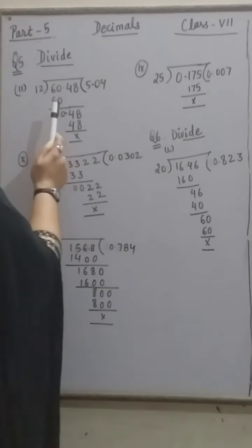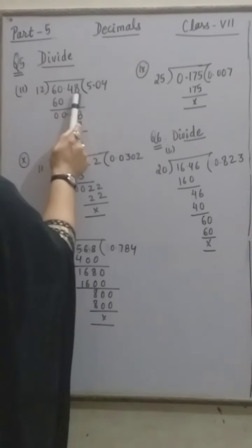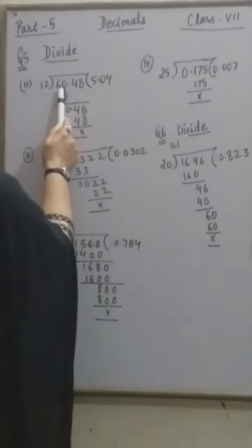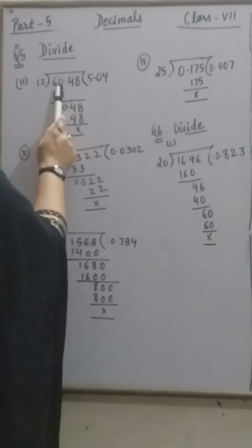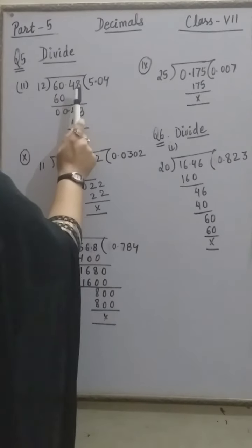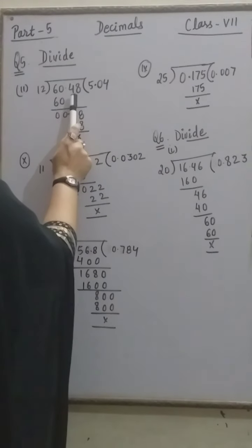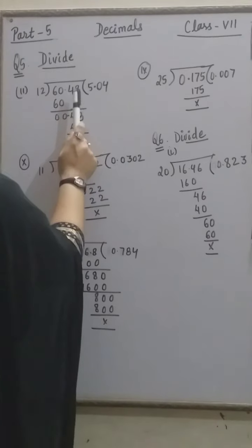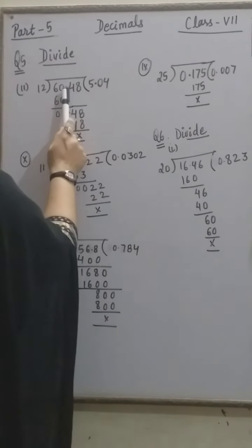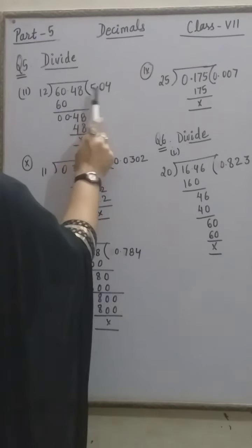We have to divide 60.48 by 12. In this decimal number we have two parts: the decimal part 0.48 and the whole number part. First we will see the whole number part. 12 goes into 60 — 5 times. Then 4 is at the 10th place. As the 10th place digit is going to participate in the division, we place the decimal point in the quotient.